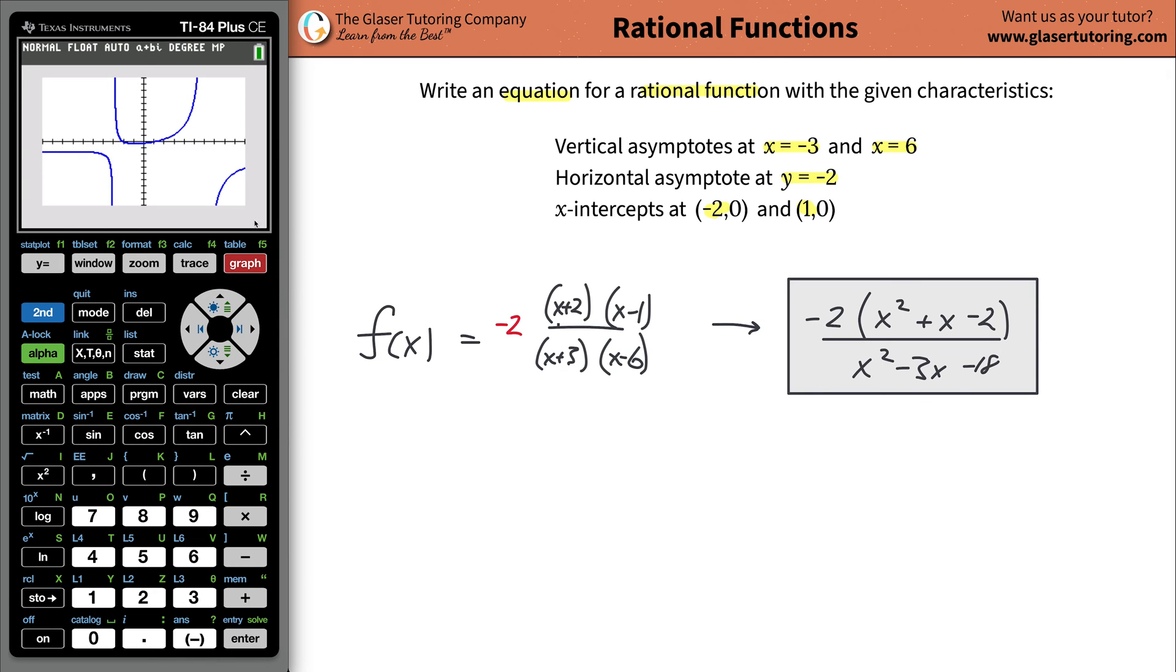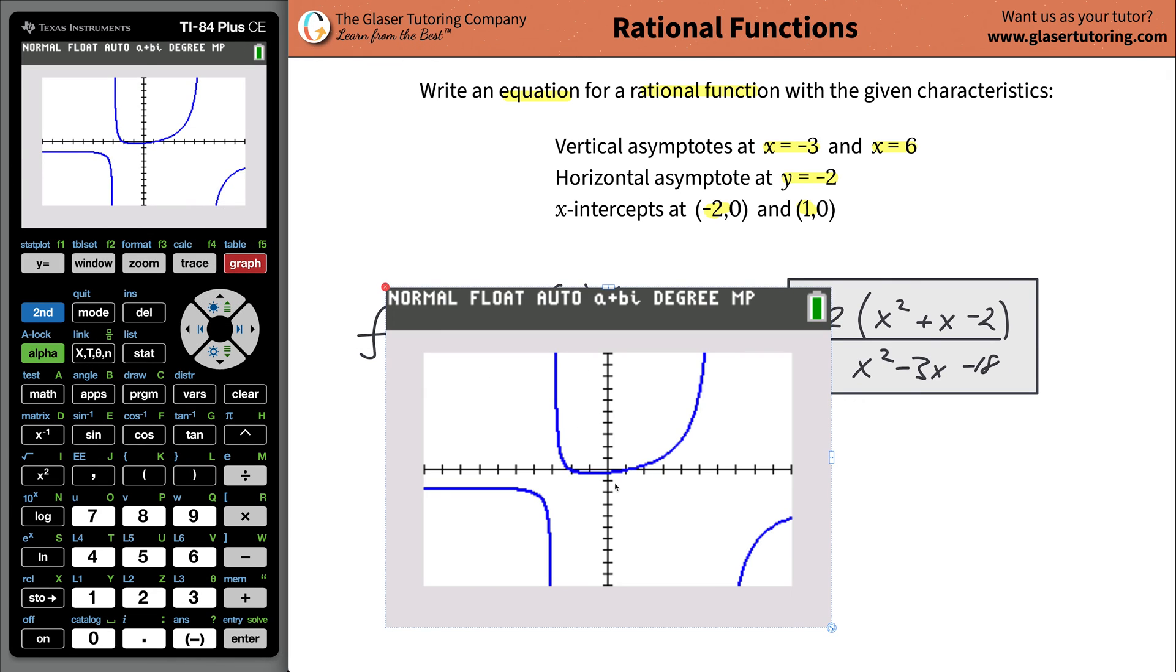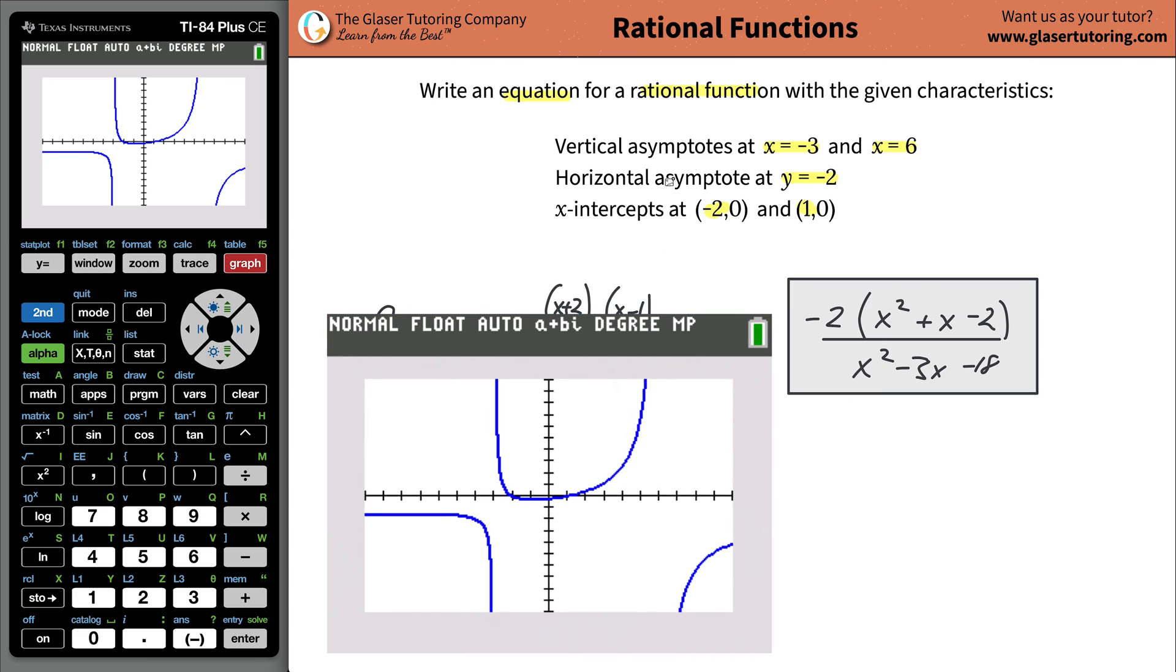So here's our graph. Now let's see what's going on here. It says we should have a horizontal asymptote at y equals negative 2. Well, that looks pretty darn close, right?